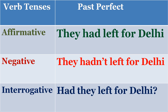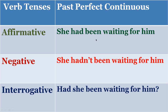Then you have past perfect, which uses 'had.' Present perfect uses 'have'; past perfect uses 'had.' Affirmative: 'They had left for Delhi.' Negative: 'They hadn't left for Delhi.' Interrogative: 'Had they left for Delhi?' Then past perfect continuous — affirmative: 'She had been waiting for him.' Negative: 'She hadn't been waiting for him.' Interrogative: 'Had she been waiting for him?' Past perfect is 'had,' and continuous means the ongoing action.